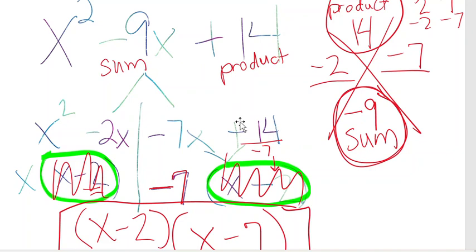Hope that helps with factoring. Again, these are only for problems that have a leading coefficient of 1. So the first term in all of the examples I talked about have just an x squared right there. Thank you.